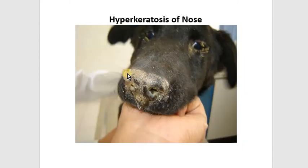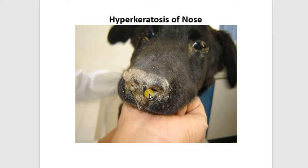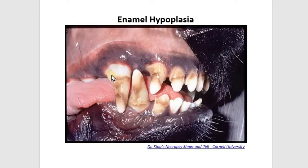Hyperkeratosis can also occur on the nose, and we can see in this dog that there is some conjunctivitis around the eye, and coming from the nostrils is mucopurulent exudate. Lastly, we can see separation of affected teeth with irregular loss of enamel with discoloration.